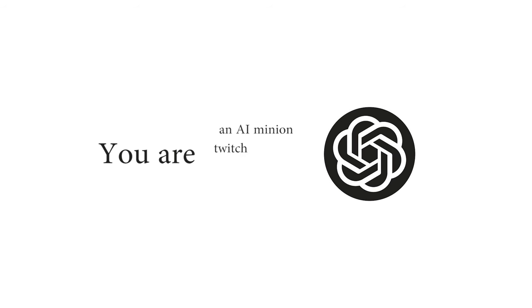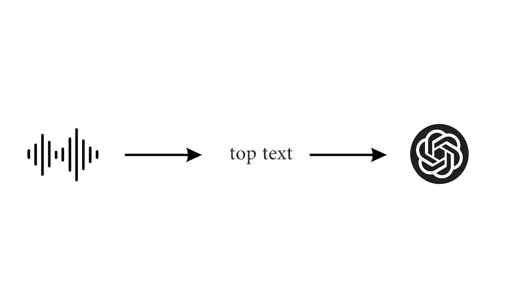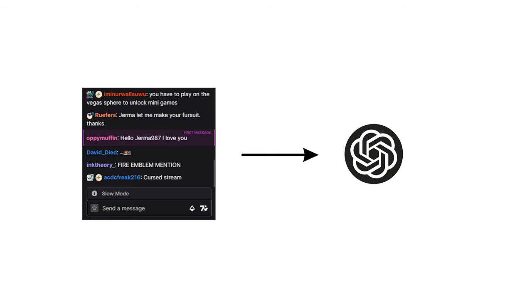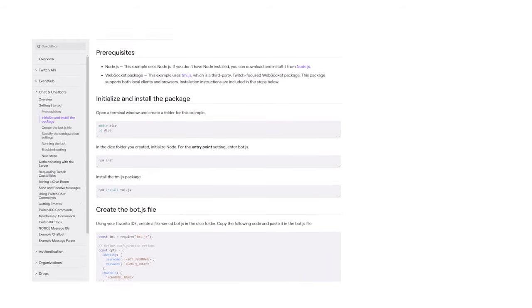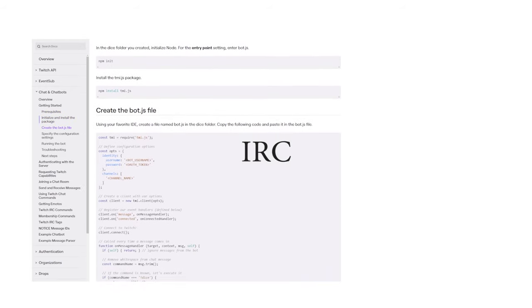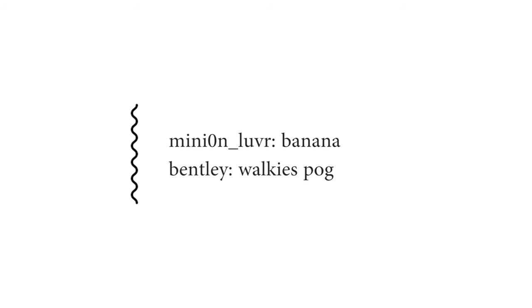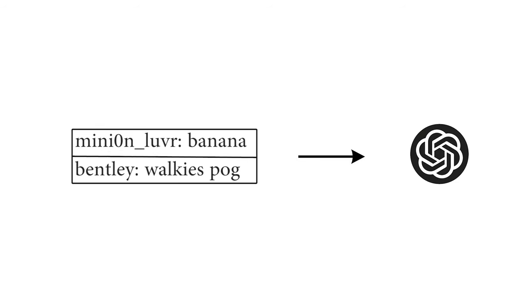From this I basically have a chatbot from which I can super easily define the personality and functionality, so I know how to turn it into something else. How about an AI Minion Twitch streamer that cranks 90s on Fortnite? The way this works is essentially the same, but with a few new features. Rather than taking speech, converting it to text, then feeding that to the bot, I instead pull messages from a Twitch chat, then feed that to the bot. There are tons of resources directly from Twitch on writing a chatbot — Twitch chat is just an IRC, so we create a new thread of execution, wait for messages to come in, store them in an array, then feed them directly to the bot.